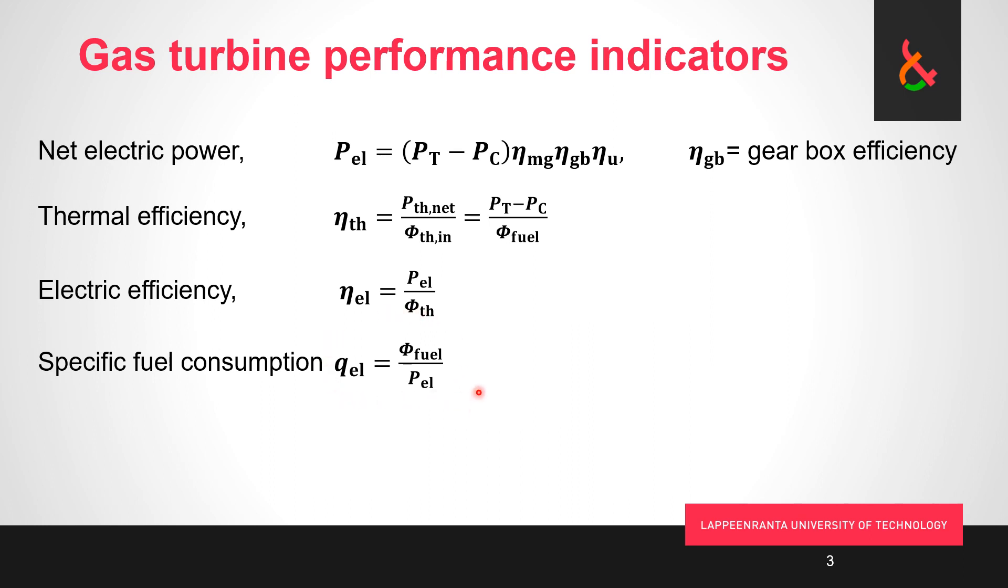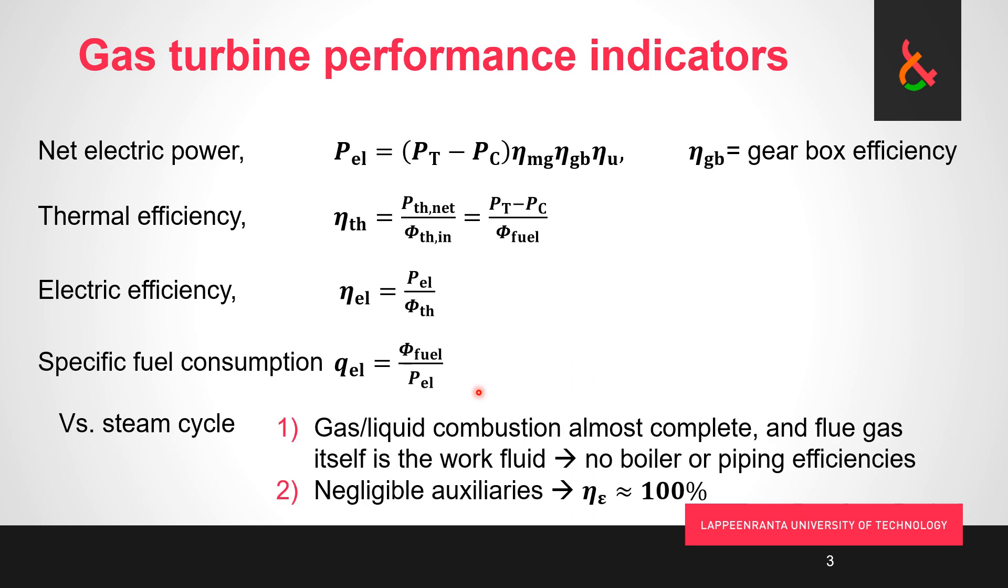And just as a summary, the major differences to the steam power plant process are that we get almost complete combustion of the fuel, and the flue gas itself is the work fluid. So no boiler and no piping efficiencies, negligible auxiliaries so basically auxiliary efficiency would be about 100%, and that's why our thermal efficiency is only very slightly less than our electrical efficiency. We get the electrical efficiency when we multiply this here with these three fairly high efficiencies.